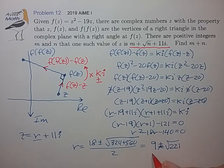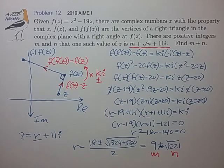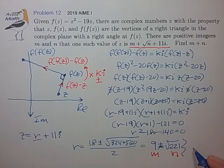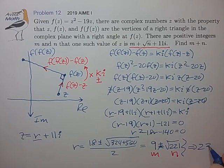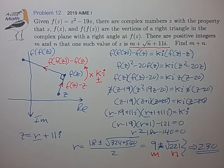We only keep the positive root, so r = 9 + √221. This means m = 9 and n = 221 in the problem statement. Summing m plus n gives us 230 as our final answer. Hope that helps, and we'll see you at the next video. Take care.